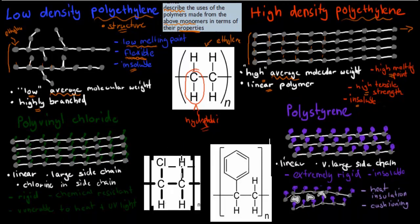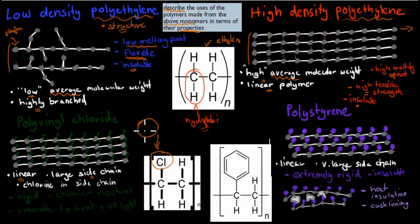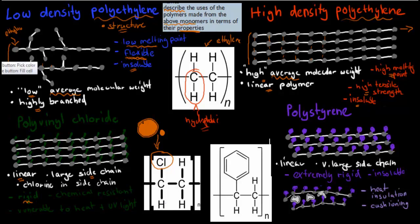Now I'll cover the structure of polyvinyl chloride and polystyrene. Polyvinyl chloride is also linear, but it has a large molecule in its side chain — specifically the chlorine atom. Even though it doesn't look large here, a chlorine atom is much bigger than hydrogen. So there's something quite big sticking out, and what that does is it makes the polymer rigid. These chlorine atoms prevent the chain from moving too far — they stop it from being able to move sideways.